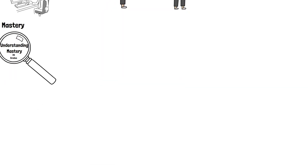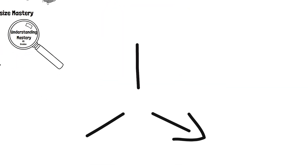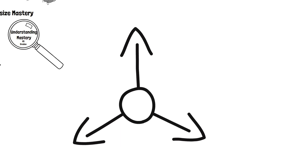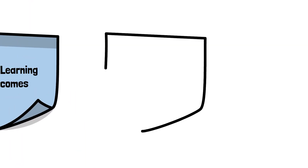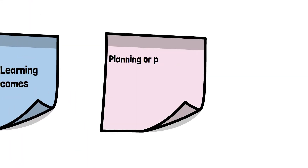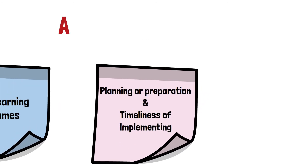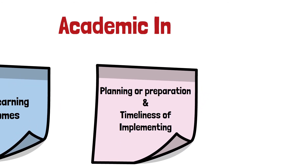This encourages students to focus on what they can achieve instead of what they must achieve. Along with relaying clear learning outcomes or goals about specific activities or classes, it is also critical to ensure students understand how academic integrity will impact their future choices, goals, and opportunities. Advanced planning or preparation and timeliness of implementing those plans can go a long way to ensuring academic integrity in online environments.